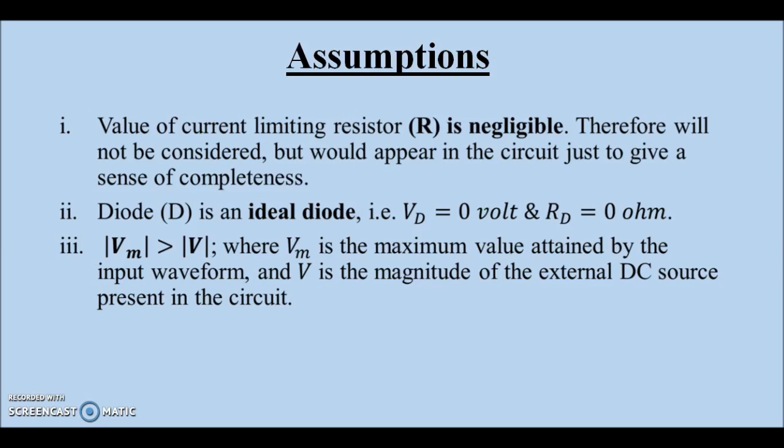Our analysis of the clipper circuit is based on three assumptions. First, the ohmic value of the current limiting resistor is negligible. Second, diode D is an ideal diode with cutting voltage of 0V and resistance of 0 ohms. Third, the magnitude of the maximum peak voltage of input signal Vm is more than that of the bias voltage V used in the circuit.